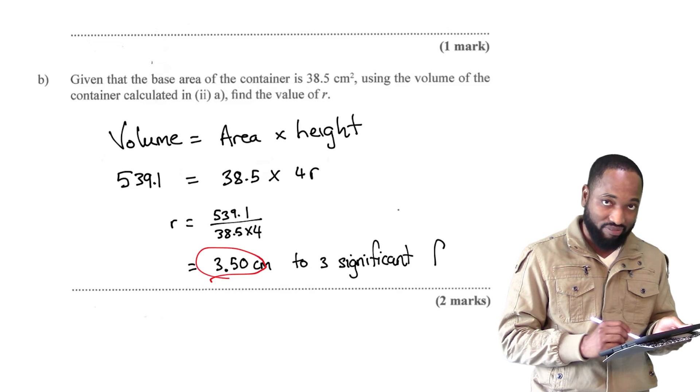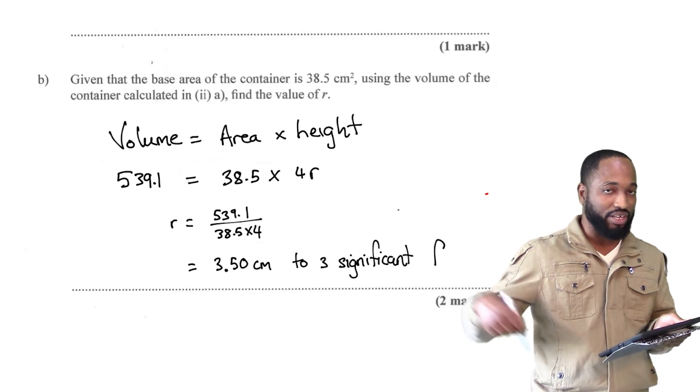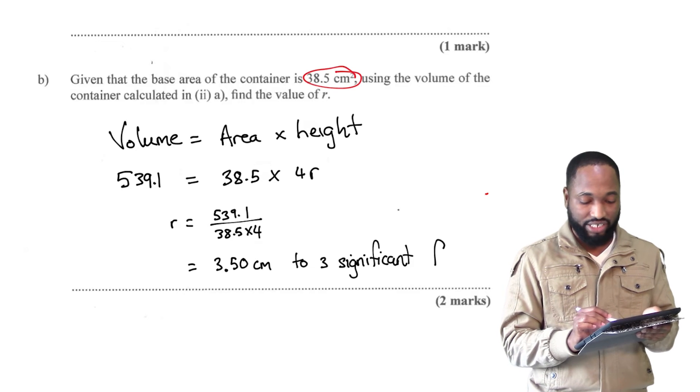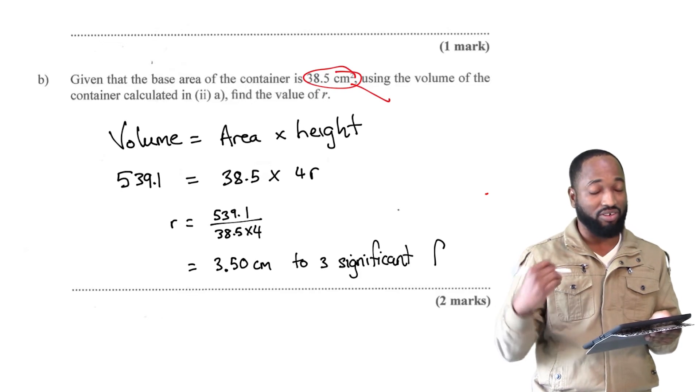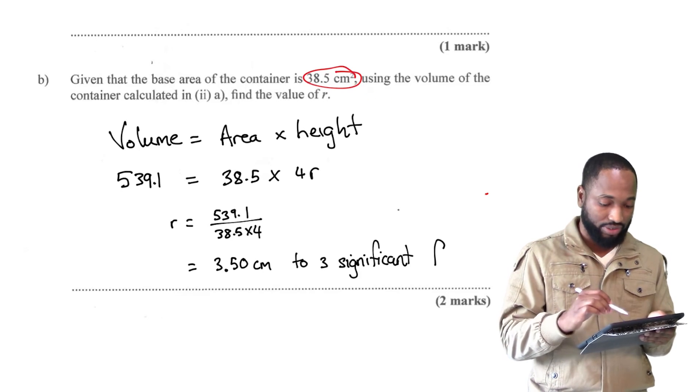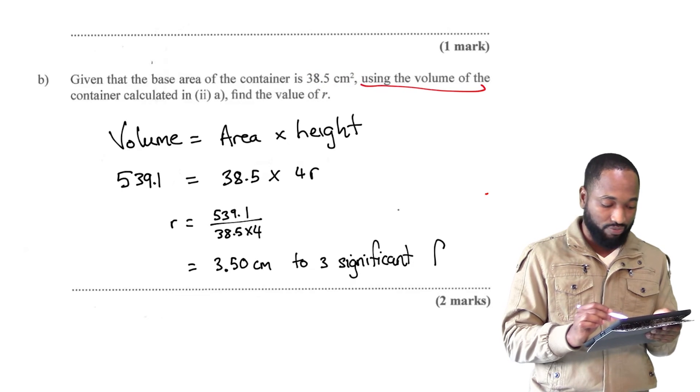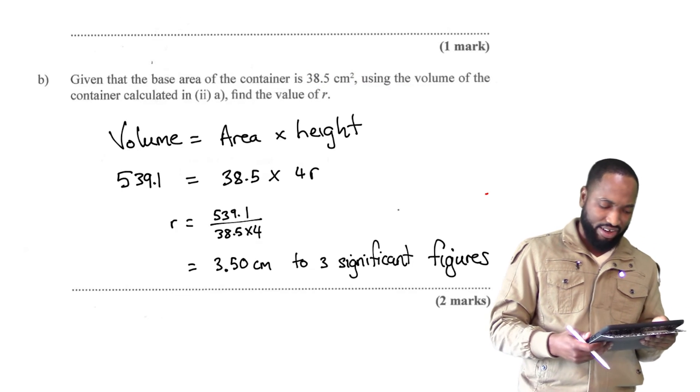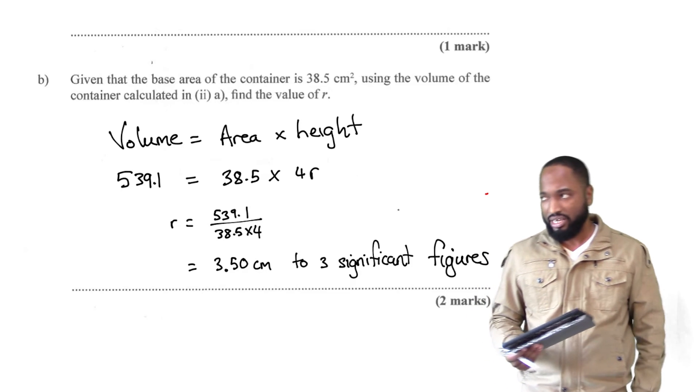Now a lot of people got the 3.5. They got exactly 3.5. But they just used straight this equals pi r squared and they made r the subject of the formula. That's not what the question was asking. You're supposed to use the volume of the container to get that. So that's the end of question 1a.